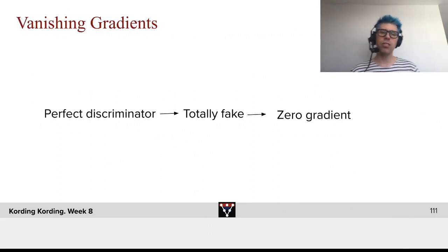There's a huge vanishing gradient problem. Imagine you have a perfect discriminator. In that case, the discriminator will always say to all images produced by the generator, that's just totally fake.